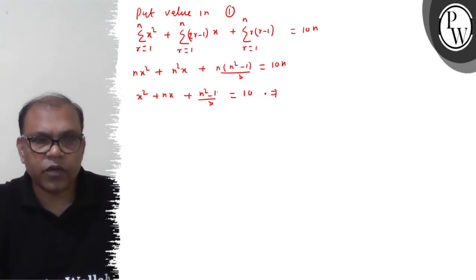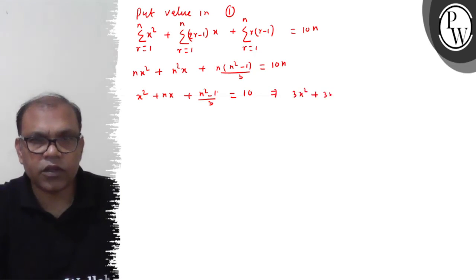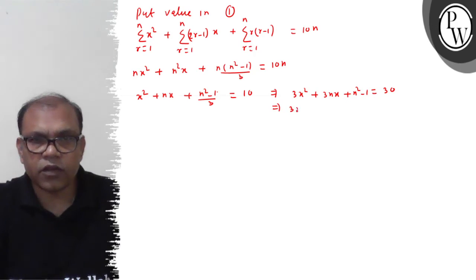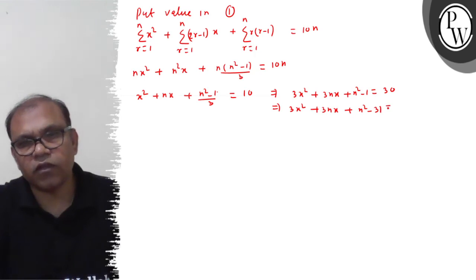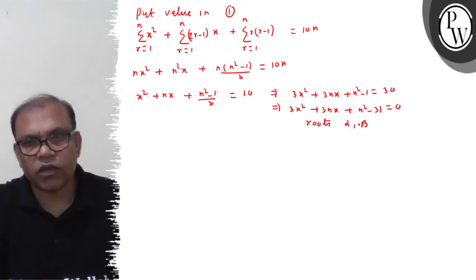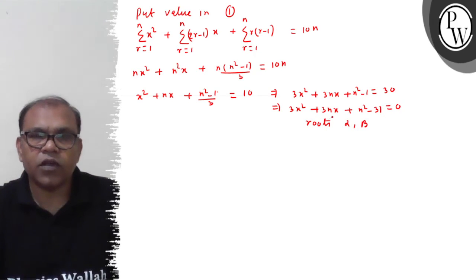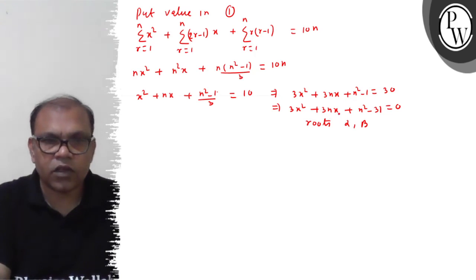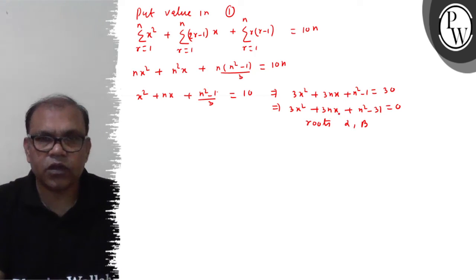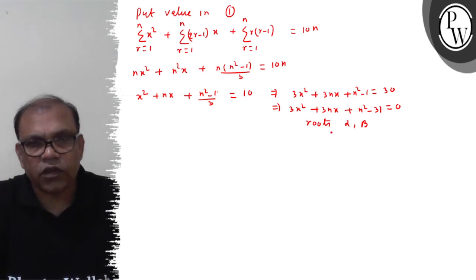Finally, simplifying this equation by multiplying by 3: 3x² + 3nx + n² - 1 = 30, which gives 3x² + 3nx + n² - 31 = 0. Now, this quadratic has roots alpha and beta, and the question says these roots are consecutive integers.